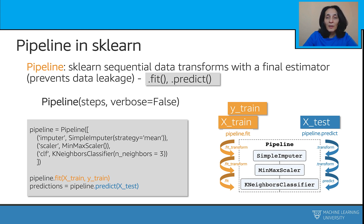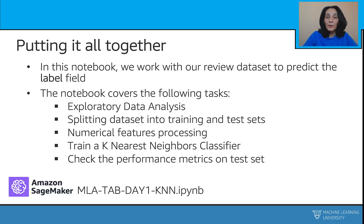The pipeline not only keeps processes organized, but also avoids data leakage from test into training. Finally, let's see how all of this works together on our project dataset to predict the label field. We'll do some exploratory data analysis, split the dataset into training and test, do some numerical feature processing, train a k-nearest neighbor classifier, and check the performance of the trained classifier on the test set. Let's open the Jupyter Notebook for a walkthrough.